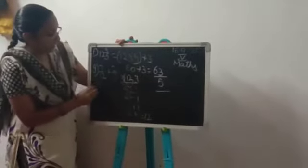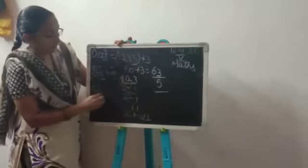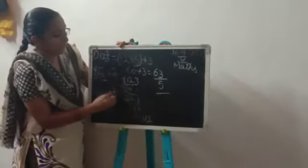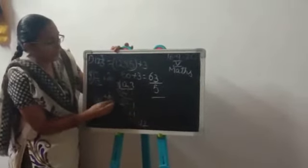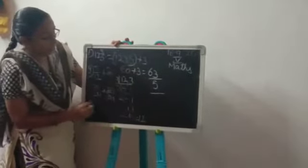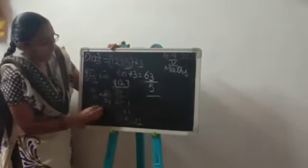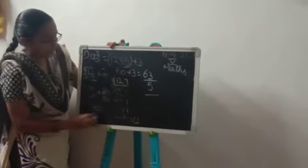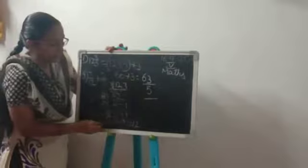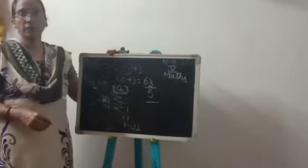Now, 7 by 12 into 1 plus 2 by 3 into 3 table. 12 is 3, 4 is. That is equal to 7 plus 8 by 12. 15 by 12 is the answer. Now this you are going to write in the blank.